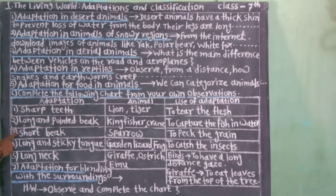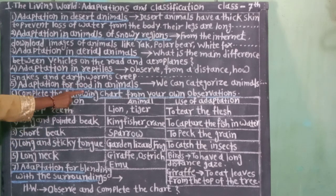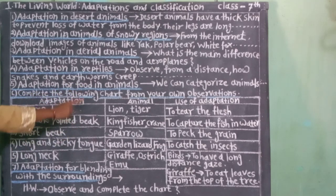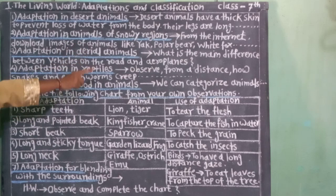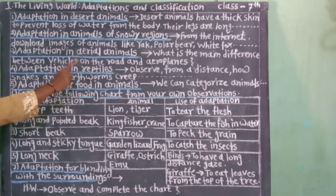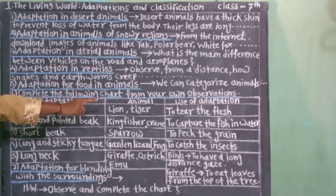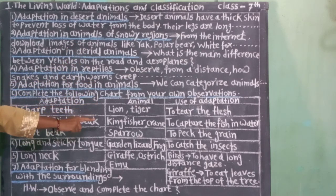जालेले अनुकुलन: तोकदार, लांब चोच. प्राणी: खंड्या, करकोचा. अनुकुलनाचा उपयोग: पाण्यातील भक्ष्य पकडण्यासाठी.